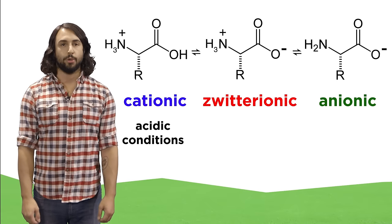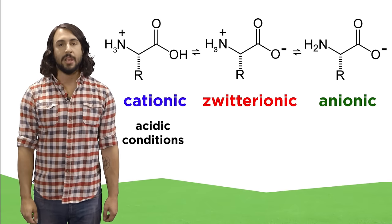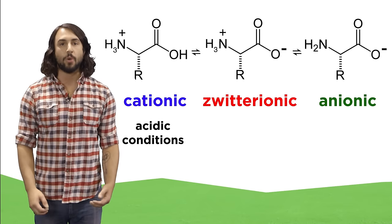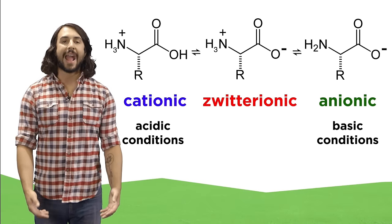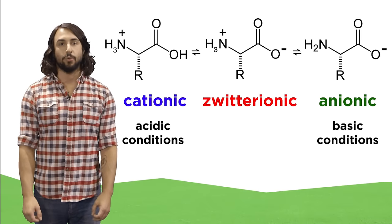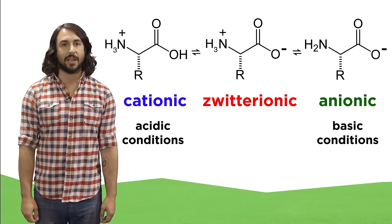A more acidic solution will favor the cationic form, since basic groups will pick up protons from the hydronium in solution, and a more basic solution will favor the anionic form, since acidic groups will readily deprotonate in the presence of hydroxide.